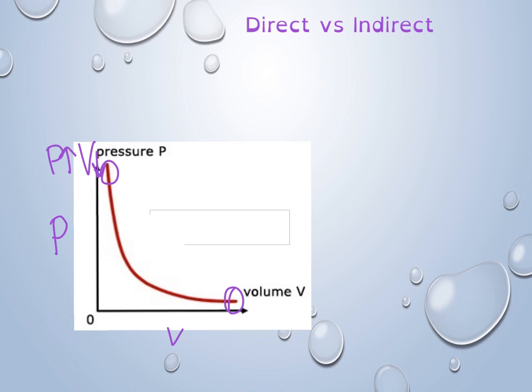And over here, we can see that as the volume is high, the pressure is low. So when you have one variable is increasing and the other is decreasing, this is an indirect relationship or an inverse.